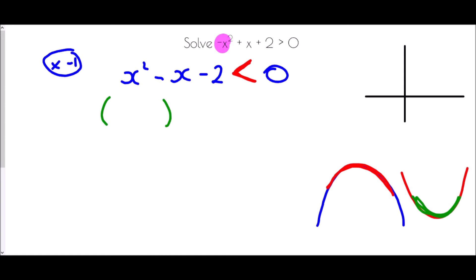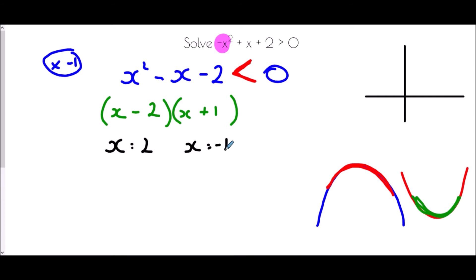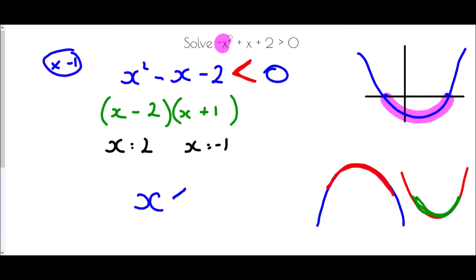Now we factorise x squared take away x take away 2 in the usual way. We need two numbers that multiply to make negative 2 but add to make negative 1 — that's negative 2 and positive 1. So x equals 2 and x equals negative 1 are the crossing points. Drawing the u-shaped graph crossing at negative 1 and 2, we want the values where x squared minus x minus 2 is less than 0 — that's everything in between. The solution is x greater than negative 1 and less than positive 2.